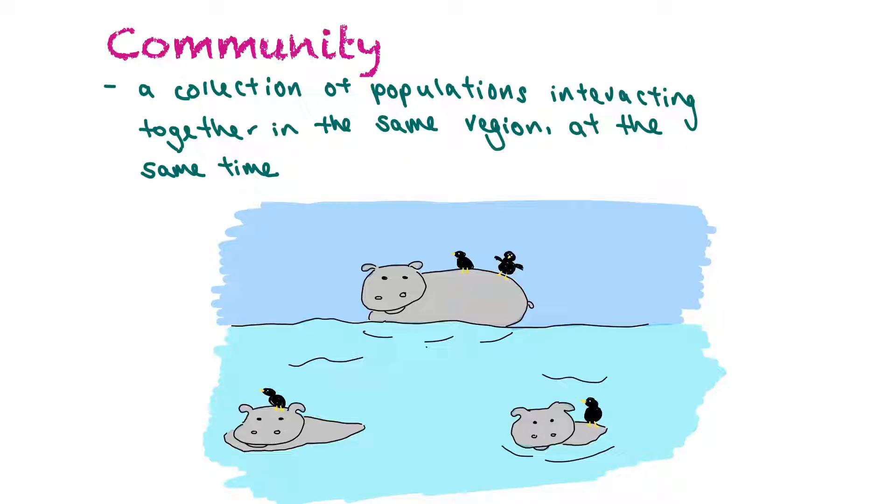A community on the other hand is a collection of populations interacting together in the same region at the same time. So in this case we have a population of hippopotami interacting with a population of birds. So that makes a community.